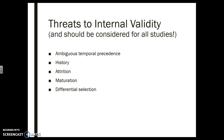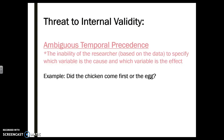A lot of these threats should be considered for all studies, but they are really vital in internal validity. The first one is ambiguous temporal precedence, which has to do with A coming before B. It's really easy to get stuck in the chicken-versus-egg argument — you have to establish that this comes before this, and that the vice versa never happens.